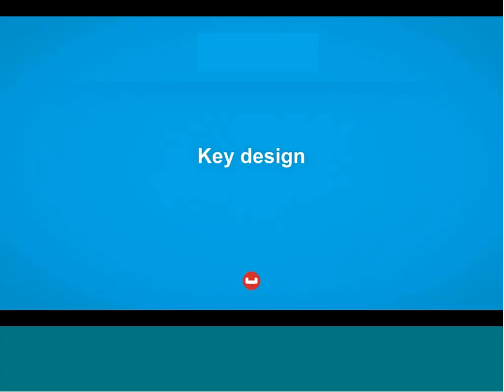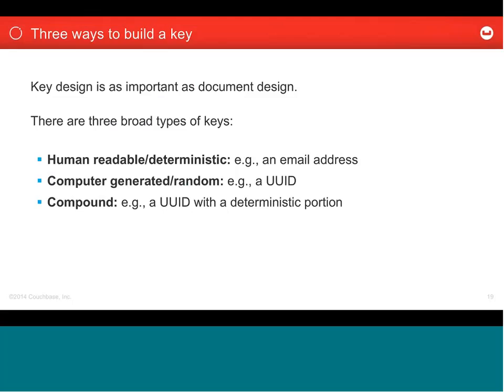That brings us to key design. When dealing with key value data, the key is absolutely the most important thing you have — if you cannot recreate that key again, you'll have trouble finding your data. With most document databases, including Couchbase, there are other ways to get to it: you could build a view, or do a N1QL query. But if you're sticking to a pure key value model, how you design the key is absolutely important.